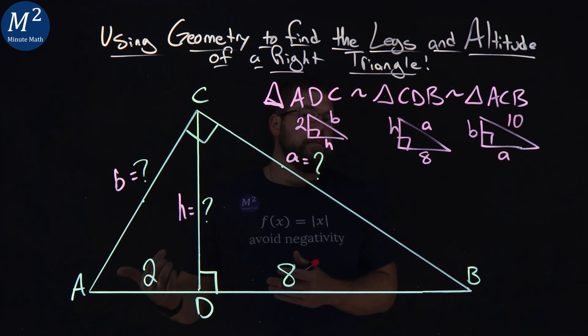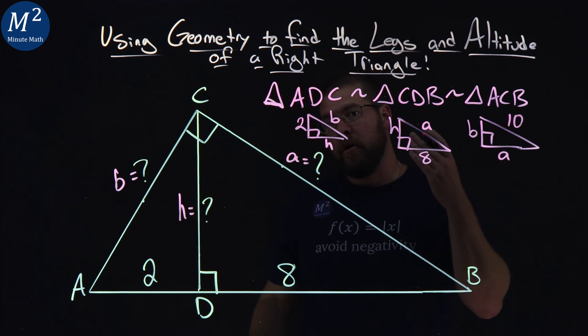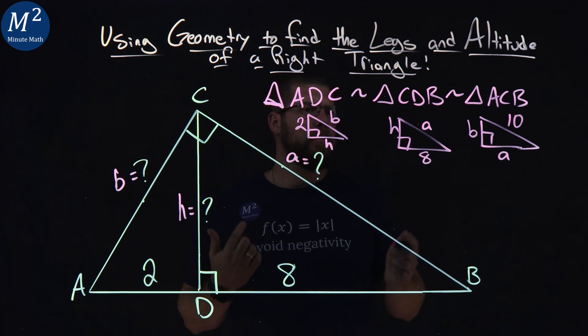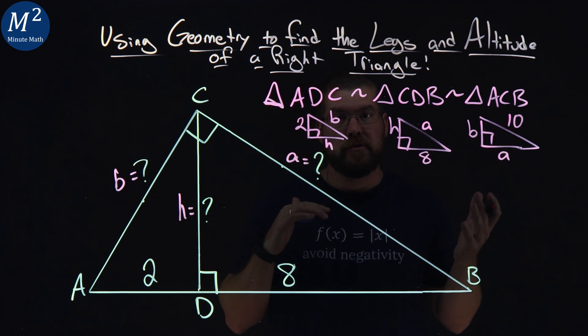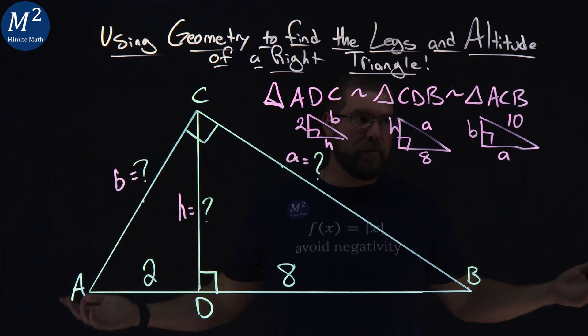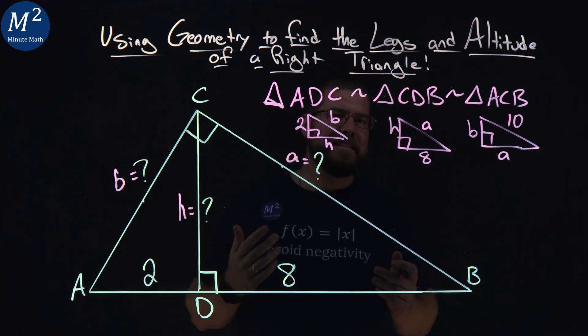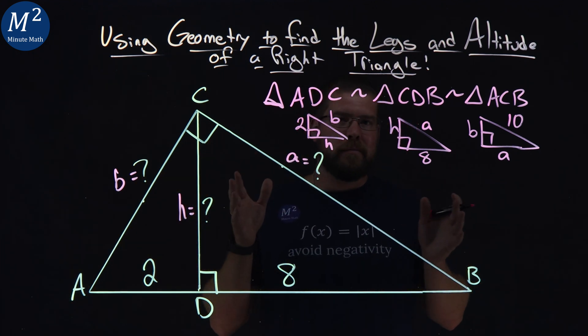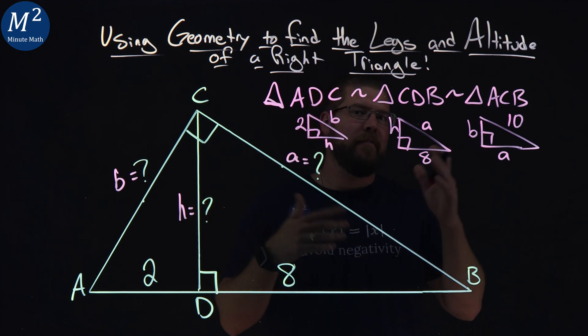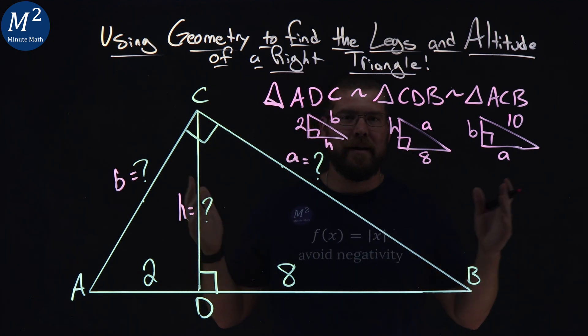So now what do we know about similar triangles is that their side lengths are proportionate. So we're going to take what we know. Can we make some proportion here and solve for a missing variable?